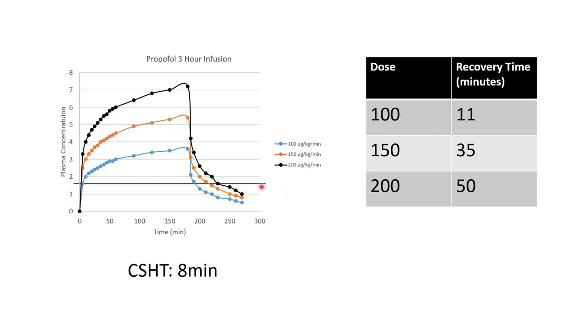So this red bar represents 1.6 mics per mil, and that is a plasma concentration associated with being awake. Now there's some variability in this, but this is a fairly accepted plasma concentration for being awake. If we look at the dose of 100 mics per kilo per minute, the context-sensitive halftime is 8 minutes, and the time to recovery was 11. So pretty similar. But at 150 mics, that recovery time now becomes 35 minutes. And if we're up at 200 mics per kilo per minute, that recovery time is 50 minutes. So it's very much dose-dependent to a dynamic endpoint like being awake or recovery.